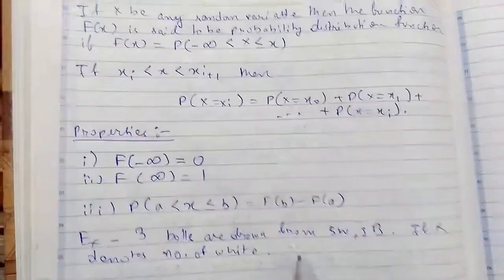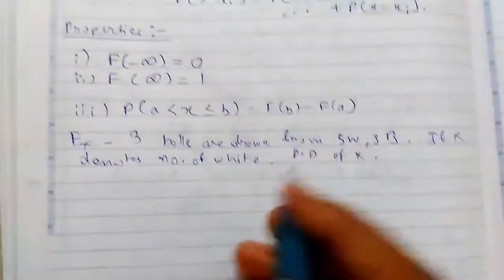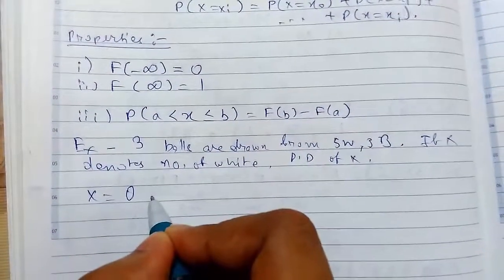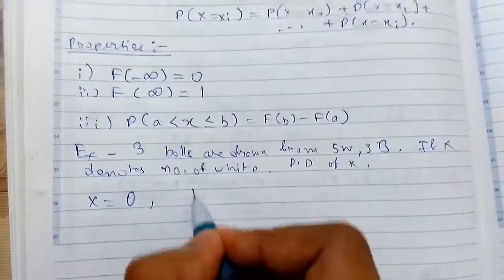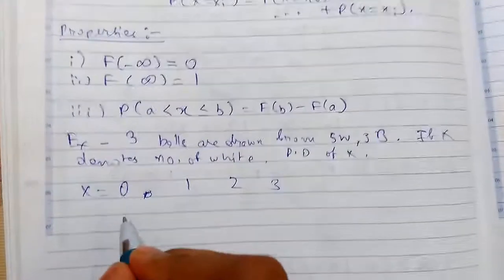If X denotes number of white, then find the probability distribution. So the value of X can be 0, 1, 2, and 3. So 3 balls, so these values are possible.